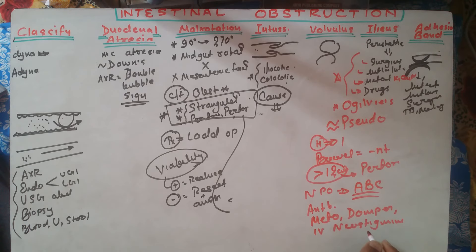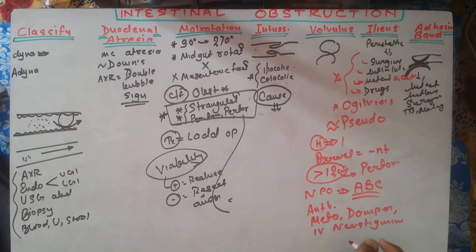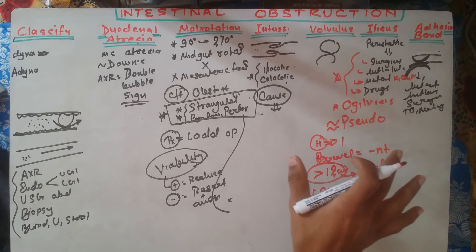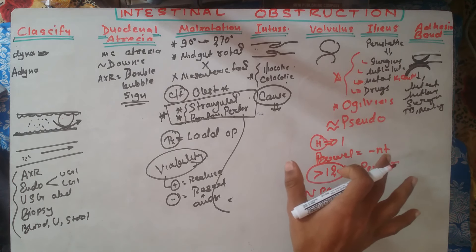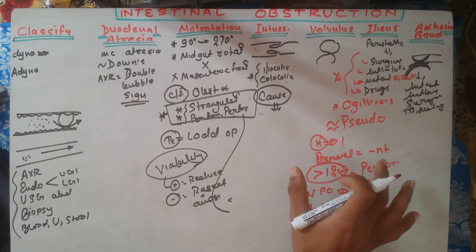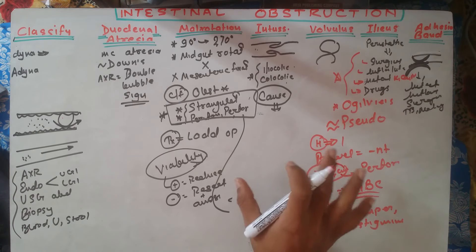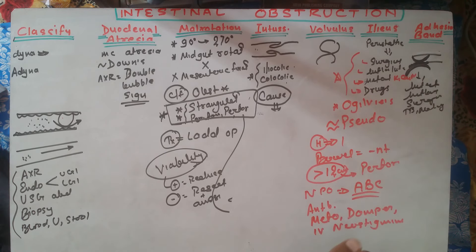Surgical indication is only when imminent or realized perforation is present. We decompress and consider stoma formation. If complication exists, segmental or subtotal colonic resection may be done, followed by ileo-rectal anastomosis.